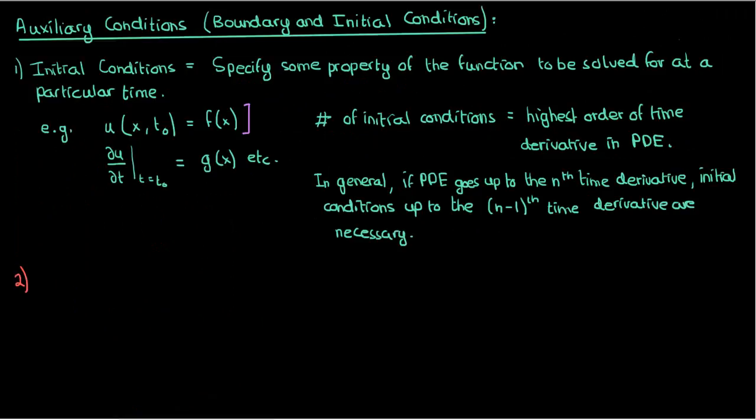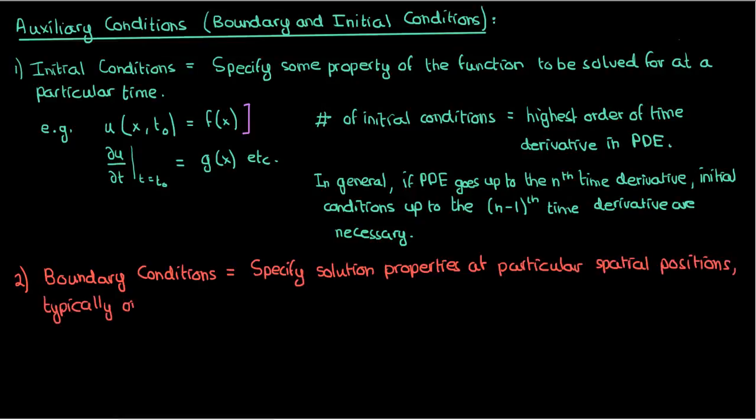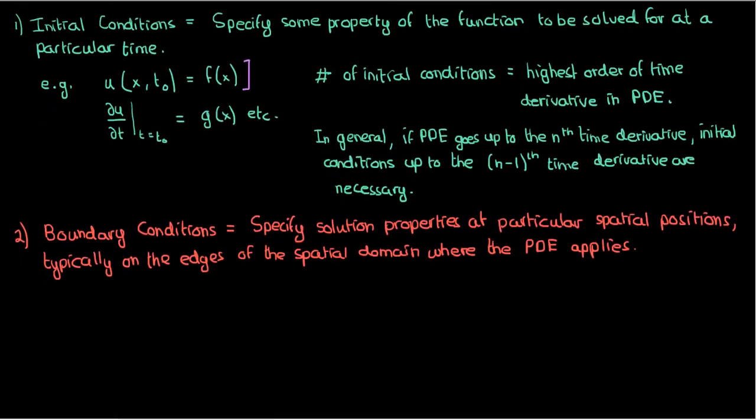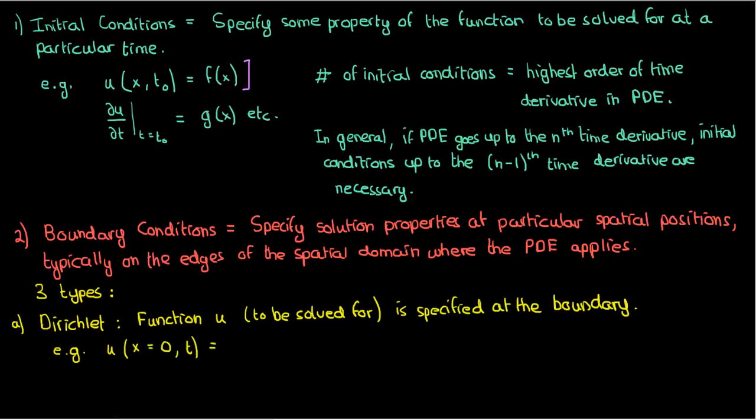The other kind of auxiliary condition is a boundary condition. Boundary conditions, unlike initial conditions, specify properties of the solution at particular spatial positions, typically on the edges of the spatial domain where the PDE applies. There are three main types of boundary conditions, at least the most important ones. The first type is the Dirichlet boundary condition. I tend to go with the French pronunciation.